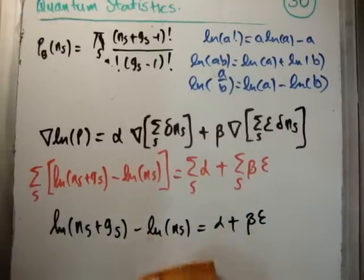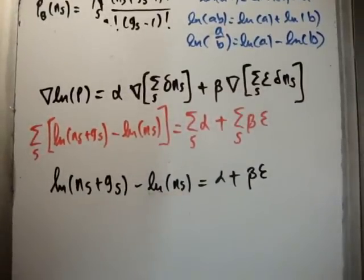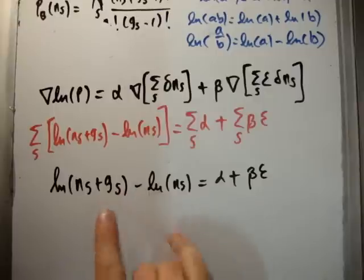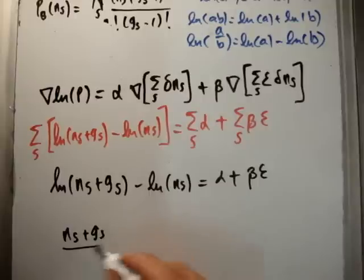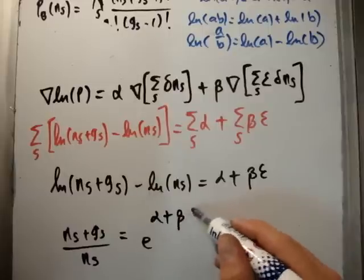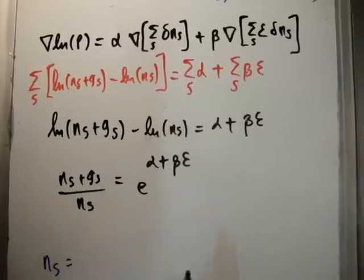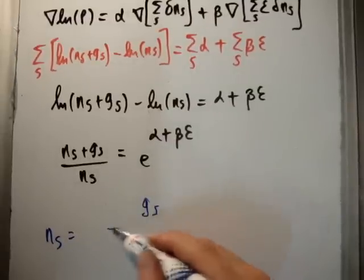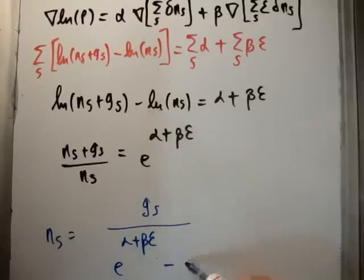On the left-hand side we have log a minus log b, which equals log(a/b). Applying that and exponentiating both sides, we get: (n sub s + g sub s) / n sub s equals e to the (alpha + beta epsilon). Rearranging for n sub s, we arrive at: n sub s equals g sub s divided by (e to the power of alpha plus beta epsilon, minus 1). That is the Bose-Einstein distribution.